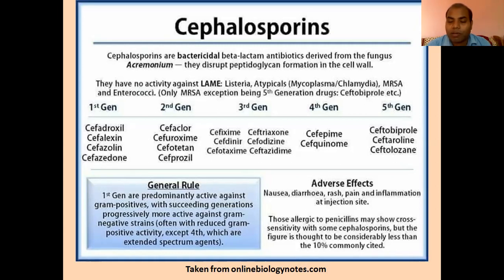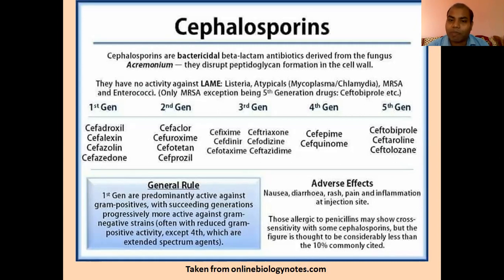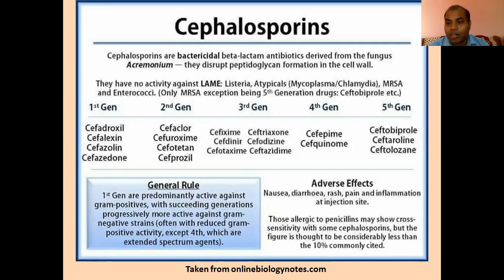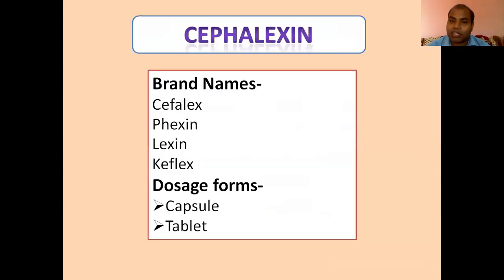Cephalosporins are very much effective against gram positive bacteria like penicillin. They are classified according to generation based on spectrum of activity. The first generation is very much effective against gram positive bacteria, but as generation increases — second, third, fourth, fifth — they become more effective against gram negative bacteria as well. The fourth generation is considered the best generation, showing reduced gram positive but increased gram negative bacterial activity.